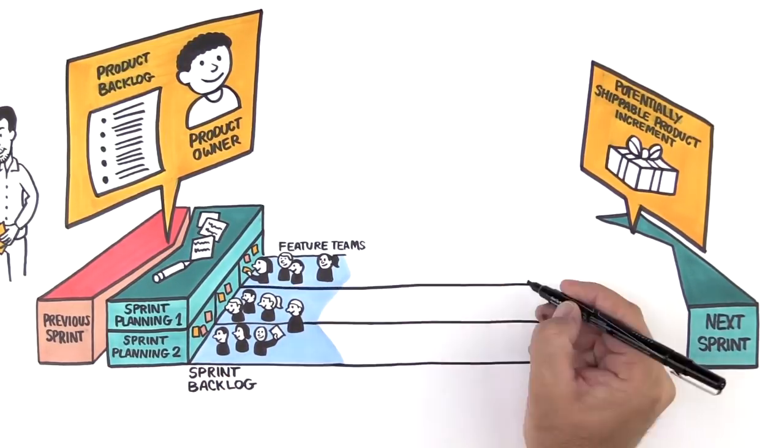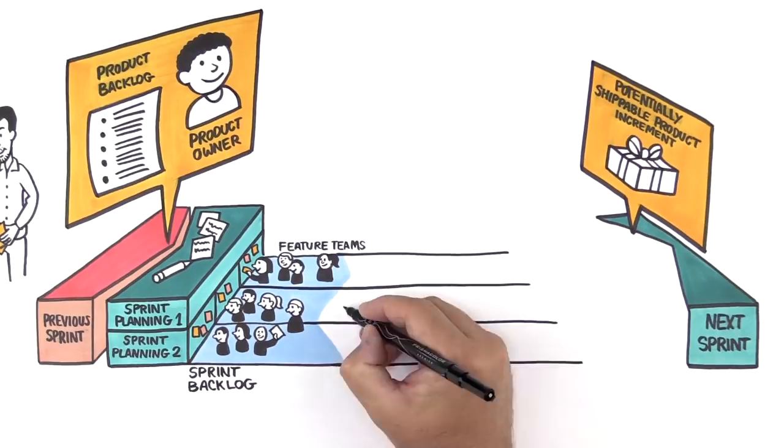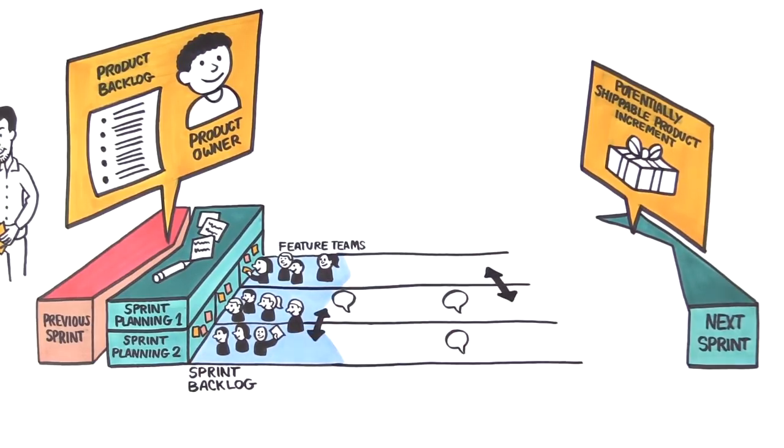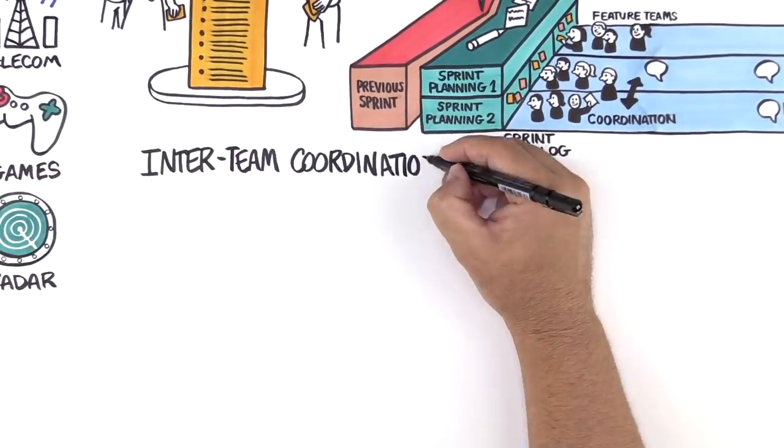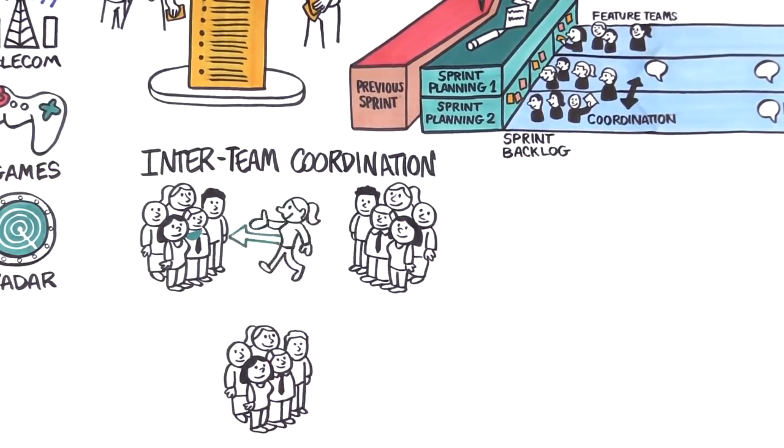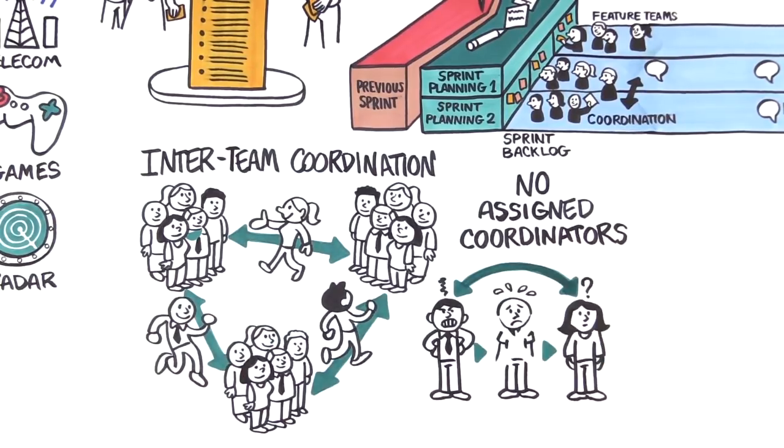Each self-managing team develops the features they selected while collaborating and continuously integrating with the other teams on the potentially shippable product increment. Coordination outside the team is now a team responsibility, so there are no assigned coordinators.